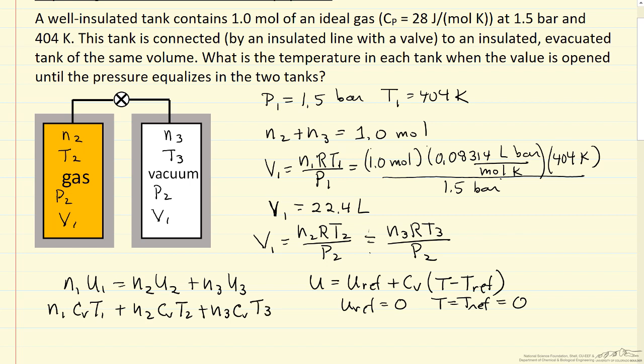U1 just becomes Cv times T1 and likewise for U2 and U3. Well the Cv's actually cancel, so the temperature that we start with, N2 T2 plus N3 T3.